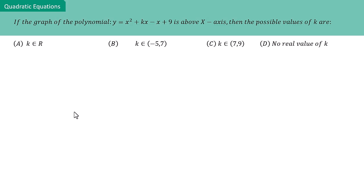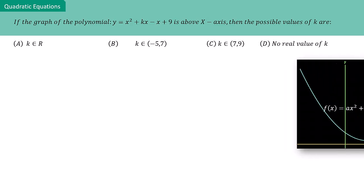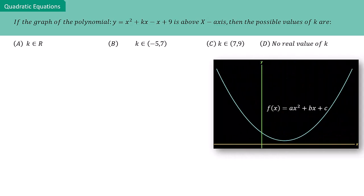To solve this question, we need to understand what it means for a graph to be above the x-axis. It implies that the value of the polynomial, denoted as f(x), is always greater than 0 throughout its entire domain.